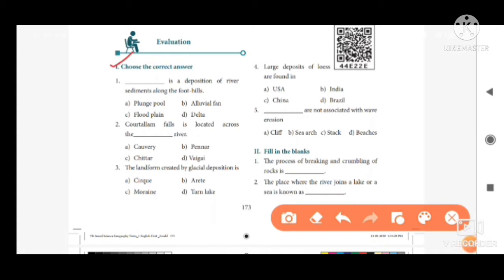First question: dash is here, the position of river sediments along the foothills. Option A, planche pool. Option B, alluvial fan. Option C, flat plain. Option D, delta. The answer is option B, alluvial fan.